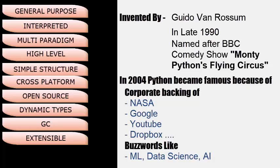Suddenly, in 2004, organizations like NASA and huge companies such as Google, Dropbox, YouTube, etc. got to know the importance of this language and started using it. Because of this corporate backing and buzzwords like Machine Learning, Data Science, and Artificial Intelligence, Python became more popular.